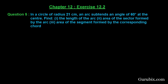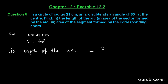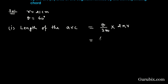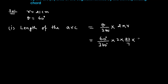This is a very important question. We are given the radius of the circle is 21 centimeters and the angle of the arc is 60 degrees, so theta is 60 degrees. We can find the length of the arc using the formula: theta over 360 degrees times 2πr, where 2πr is the circumference of the circle. Substituting: 60 over 360 times 2 times 22/7 times 21 centimeters.